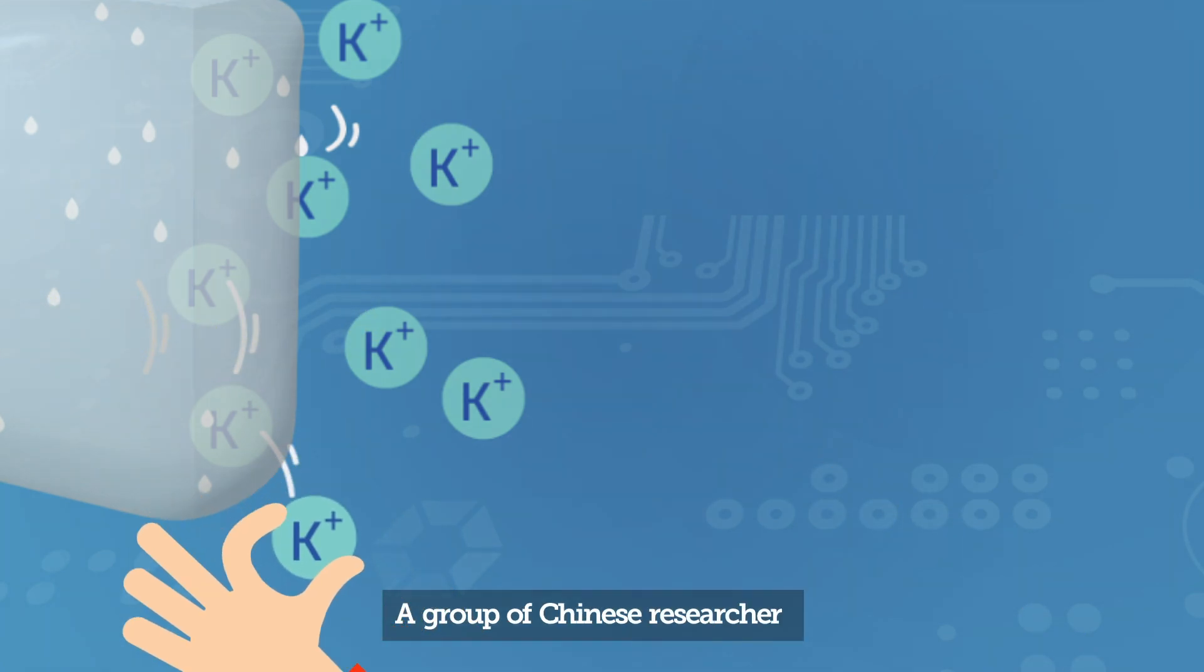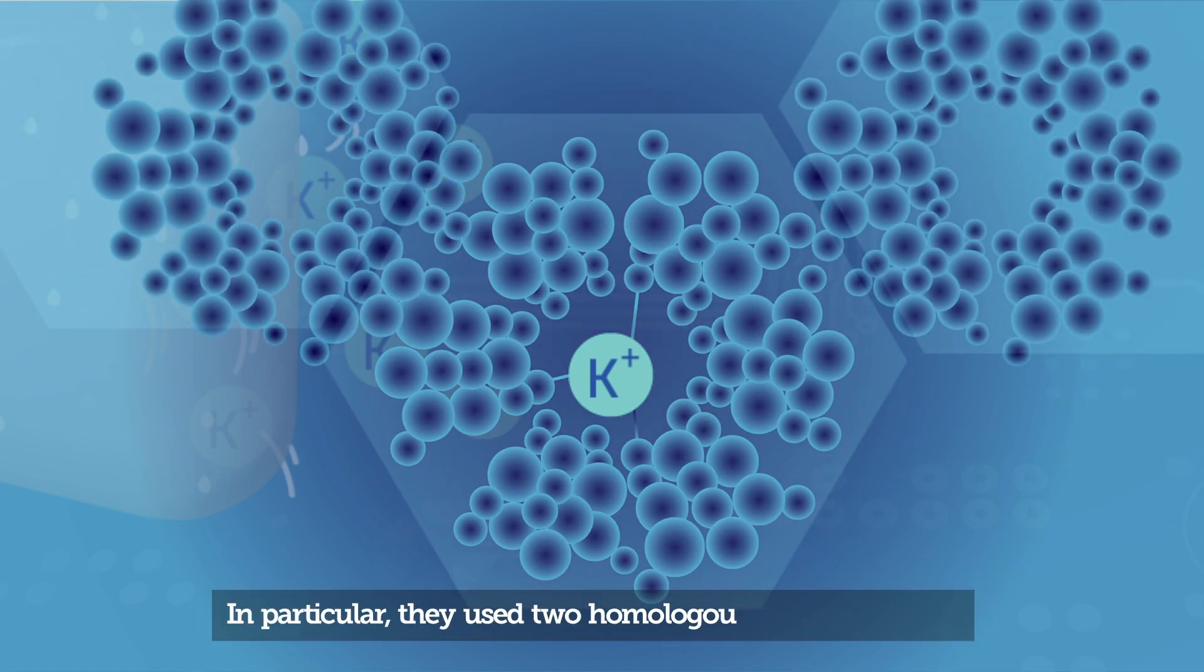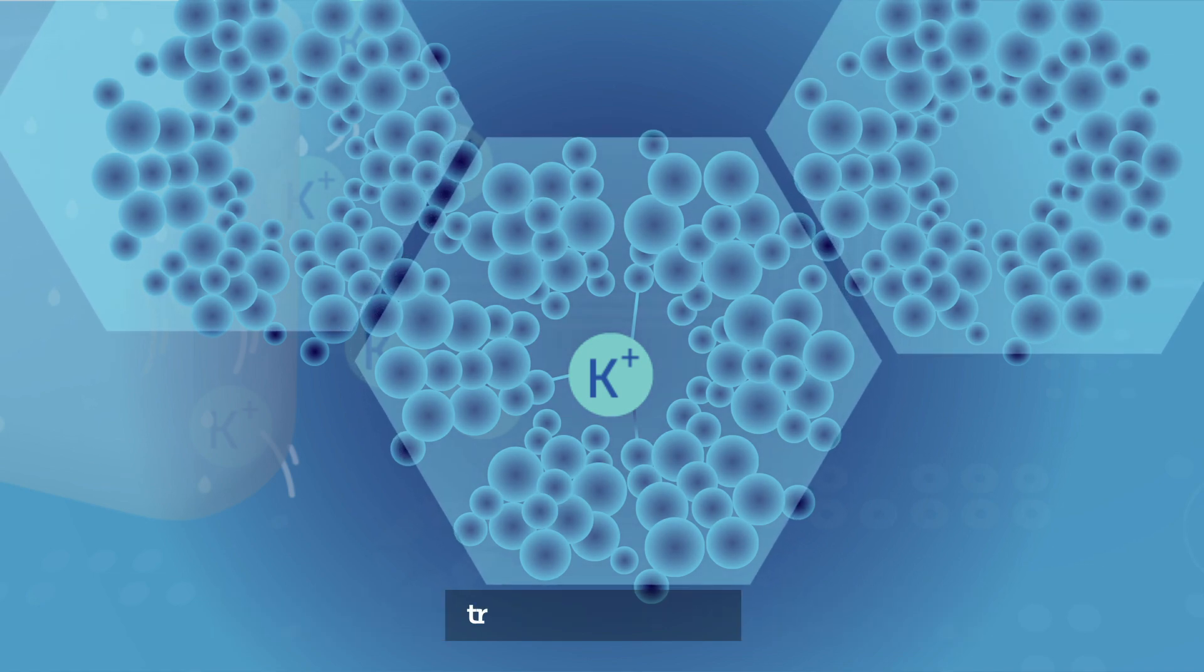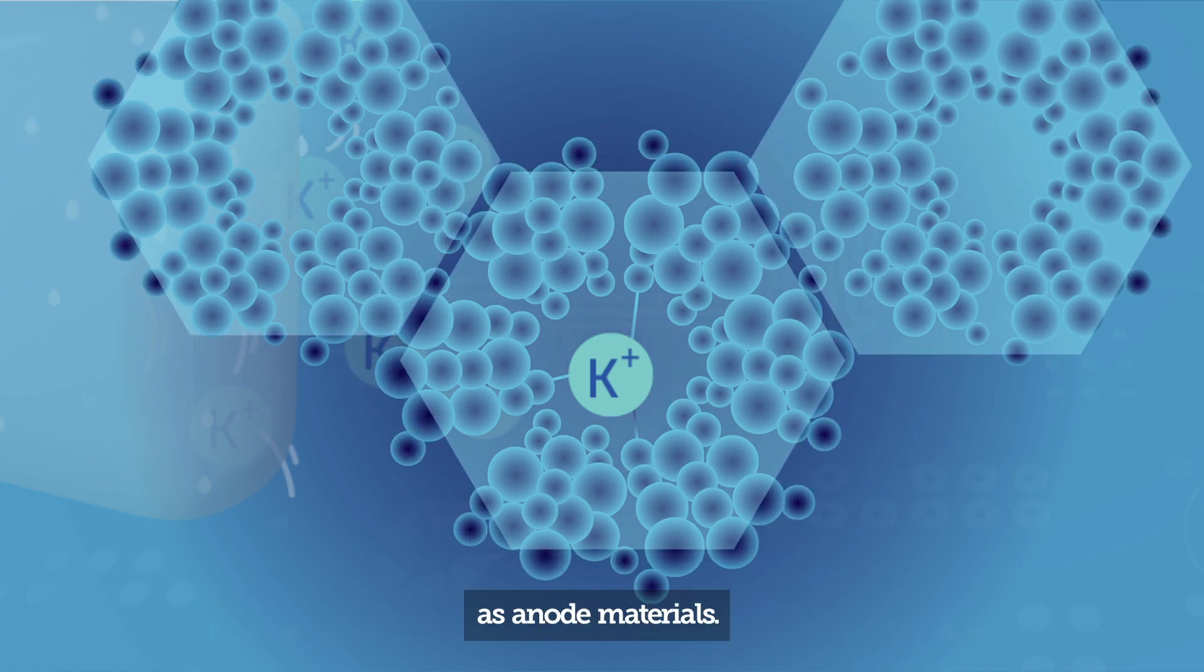A group of Chinese researchers set out to develop an organic potassium ion storage structure. In particular, they use two homologous bipolar covalent triazine frameworks, or CTFs, as anode materials.